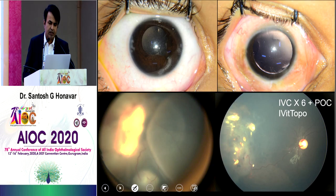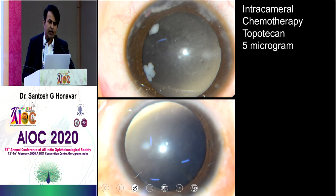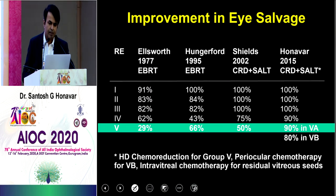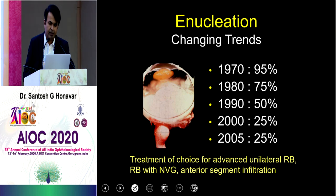For anterior segment seeds, we give intracameral injection of topotecan — 5 micrograms is all that it takes for the seeds to go away. Earlier we were enucleating these patients because no treatment was available. With all these advances combined, our success has jumped from 25% to 80% in Group E retinoblastoma.